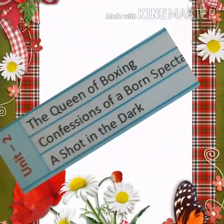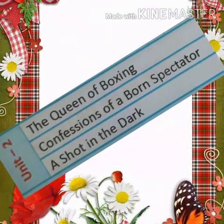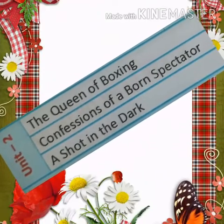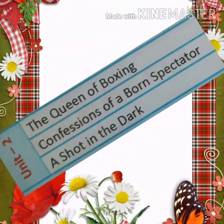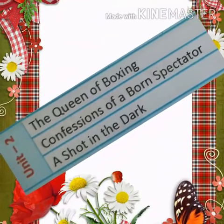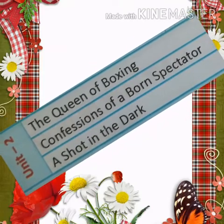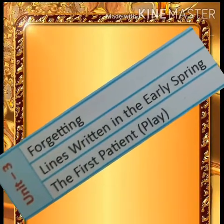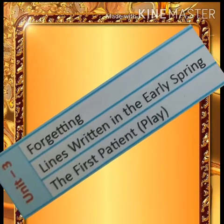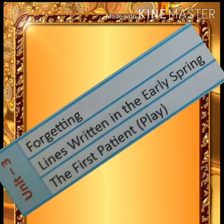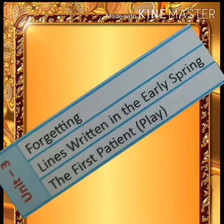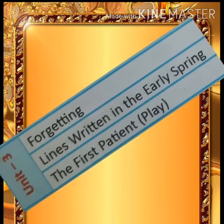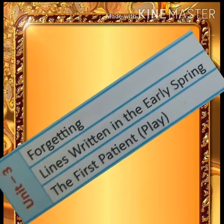In the second unit we have a wonderful prose 'The Queen of Boxing', an amusing poem 'Confessions of a Born Spectator', and a remarkable supplementary reader 'Are Shot in the Door'. In the third unit we have a memorable lesson 'Forgetting' and a nature poem 'Lines Written in the Early Spring', and an amusing comical play 'The First Patient' as a supplementary reader.